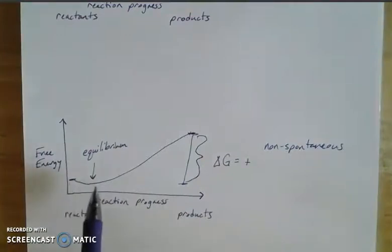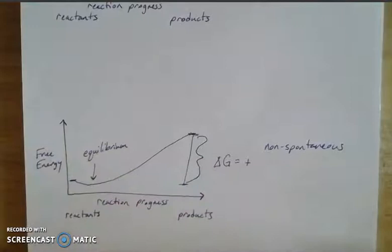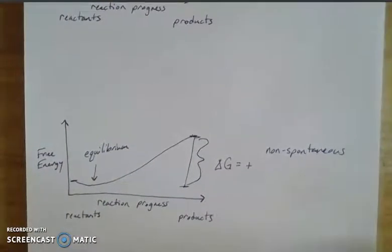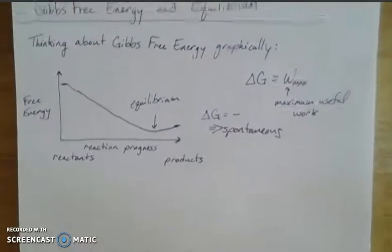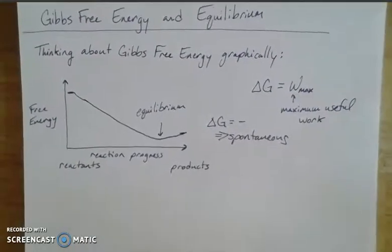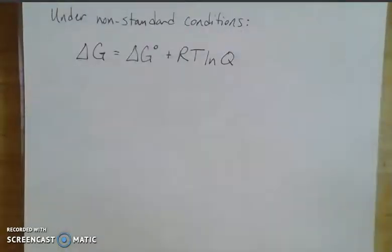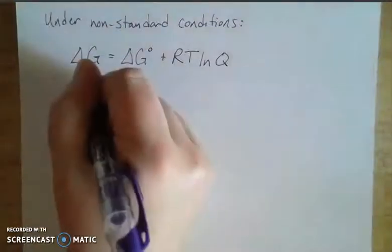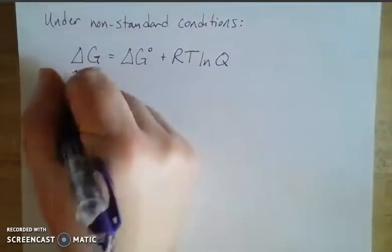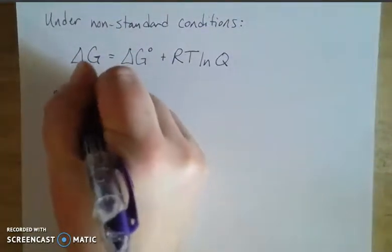Now, if we can talk about equilibrium with respect to thermodynamics, with respect to energy, which we can, then we must be able to talk about equilibrium constants. And we can relate the equilibrium constants to this change in free energy. So under non-standard conditions, this would be my change in Gibbs free energy under non-standard conditions.